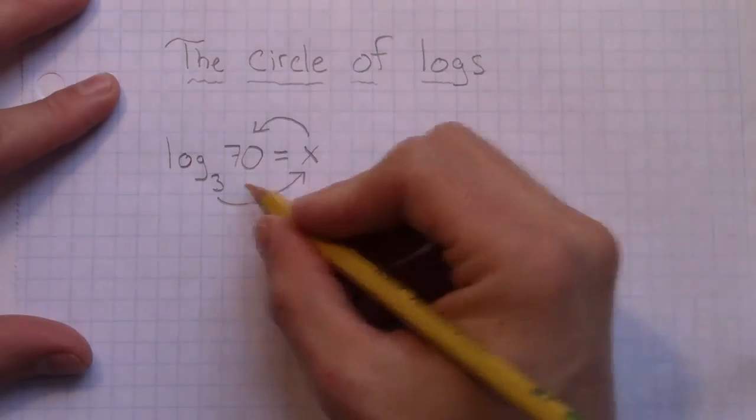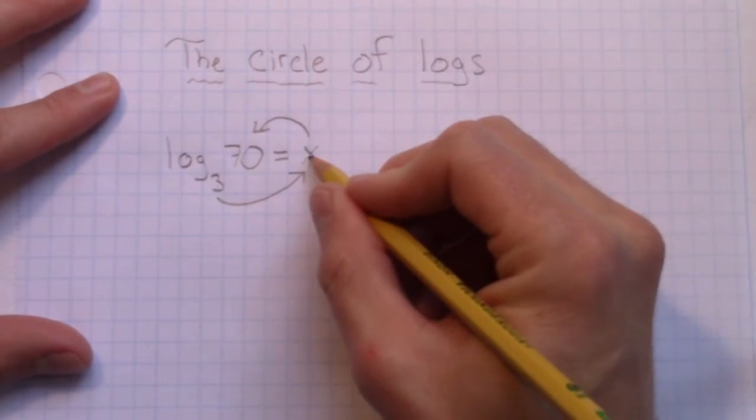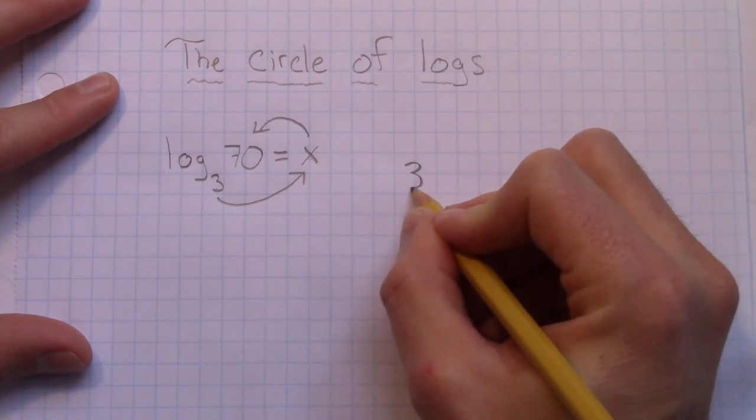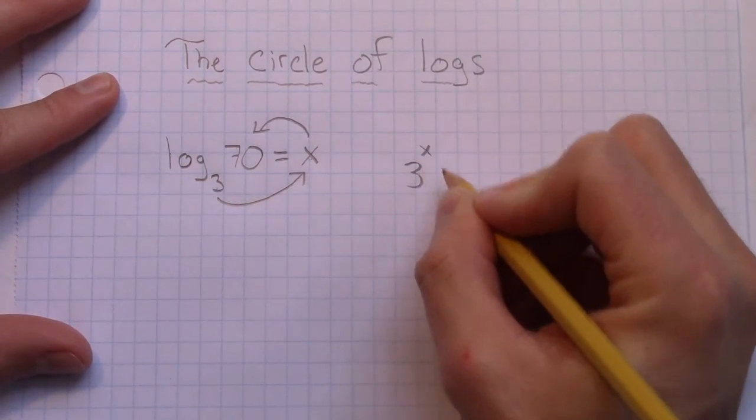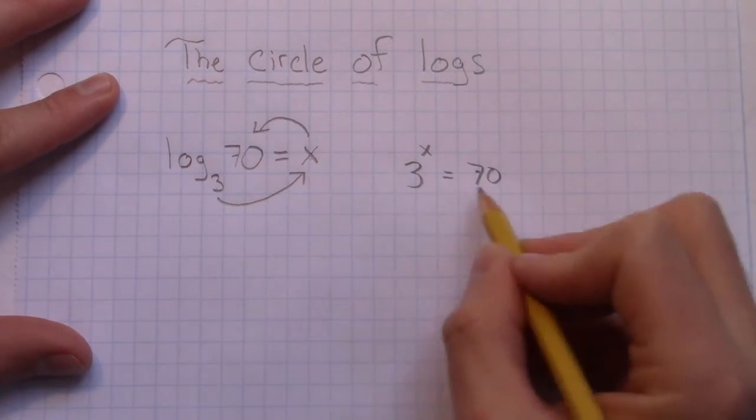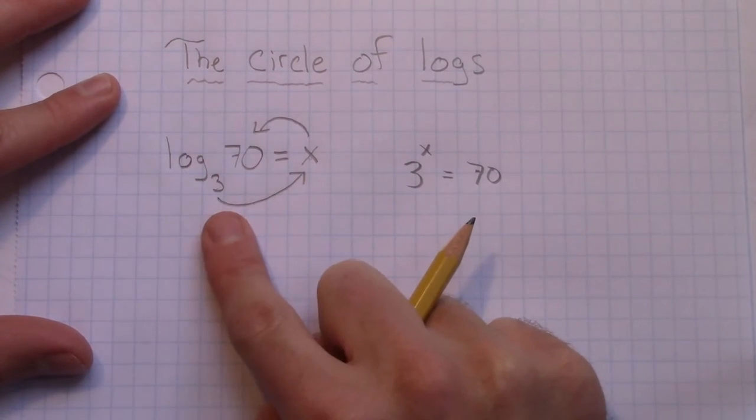And that's exactly what's happening with this logarithm. So the answer for this logarithm is x, which is actually the exponent in the exponential. So it's base 3. So 3 to the power of x equals 70. Those two statements right here are equivalent. All right, so if I write this, that is saying this. If I write this, that is saying this. These are equivalent statements.